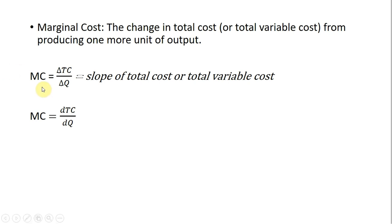In algebra, we can write marginal cost as the change in total cost. The numerator here means change in total cost divided by the change in quantity. This is just a slope. We're measuring how one variable changes from a one unit change in another variable. So marginal cost is technically the slope of total cost or the total variable cost equation.